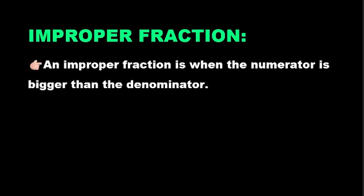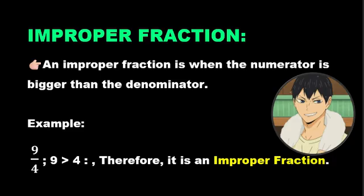Second is improper fraction. An improper fraction is when the numerator is bigger than the denominator. For example, 9 over 4 - 9 is bigger than 4, therefore it is an improper fraction.